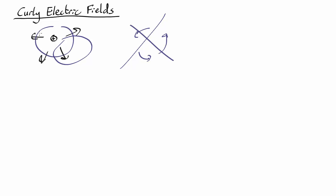But what Faraday discovered was that if you change the magnetic field, then you can get a curly electric field produced. So let's see how this works.